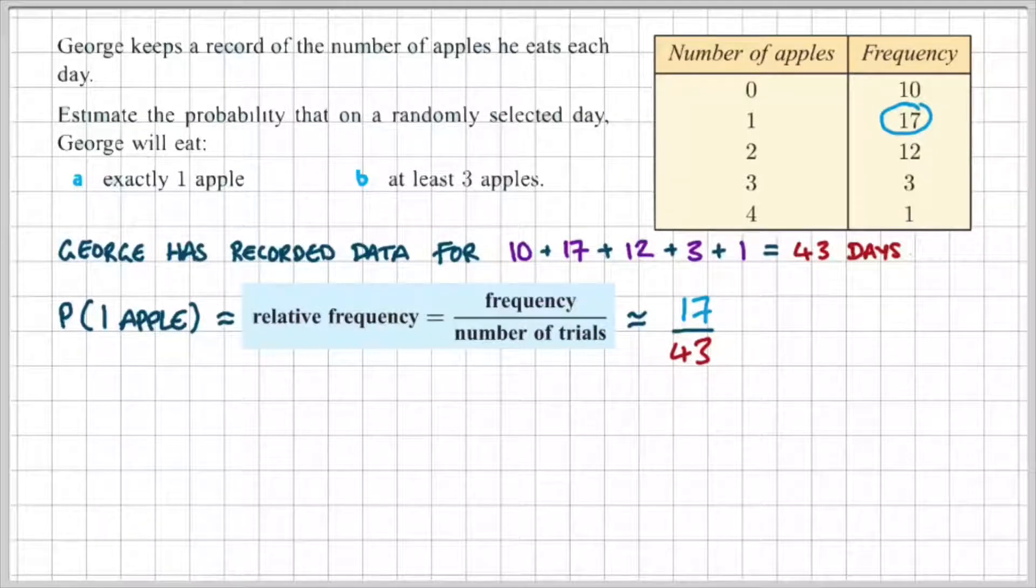So, 17 divided by 43 will give us an approximate value of 0.395. Or, we could say that the probability of George eating exactly one apple is about 40% of the time.